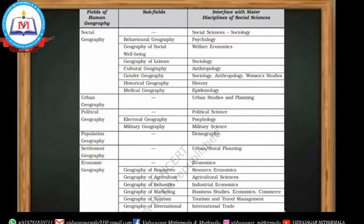These subfields form the main field. The sister disciplines are interactive. Social geography is one of the main sub-fields, and sociology is closely related to social geography.